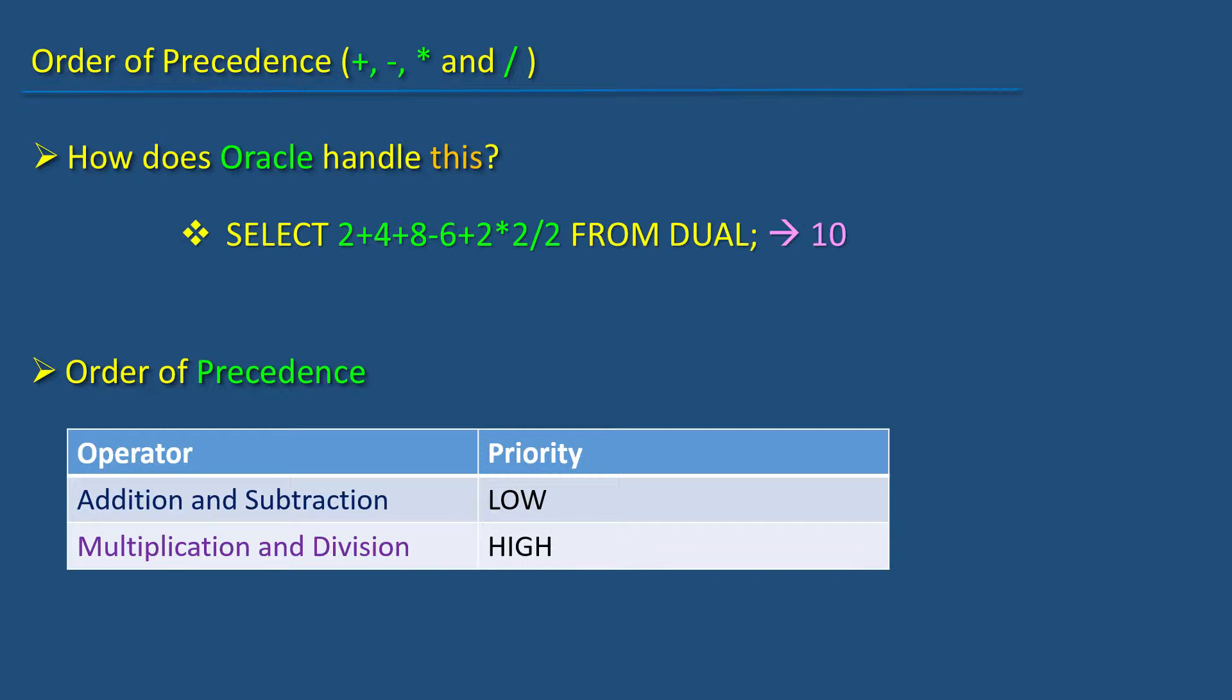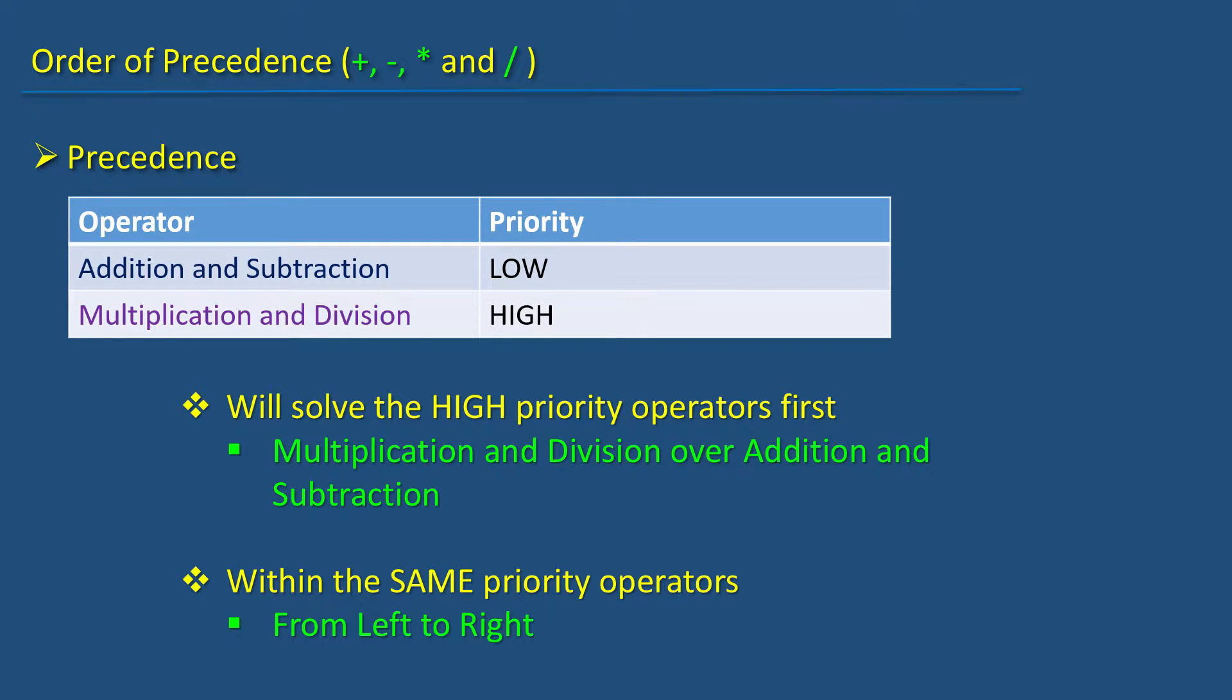However, a multiplication or division has more priority than an addition and subtraction. Meaning that in an expression containing multiple operators, the high priority operators get solved first over the low priority operators. So, between an addition and multiplication, multiplication gets the precedence. And between the operators of a same category, Oracle goes from left to right.